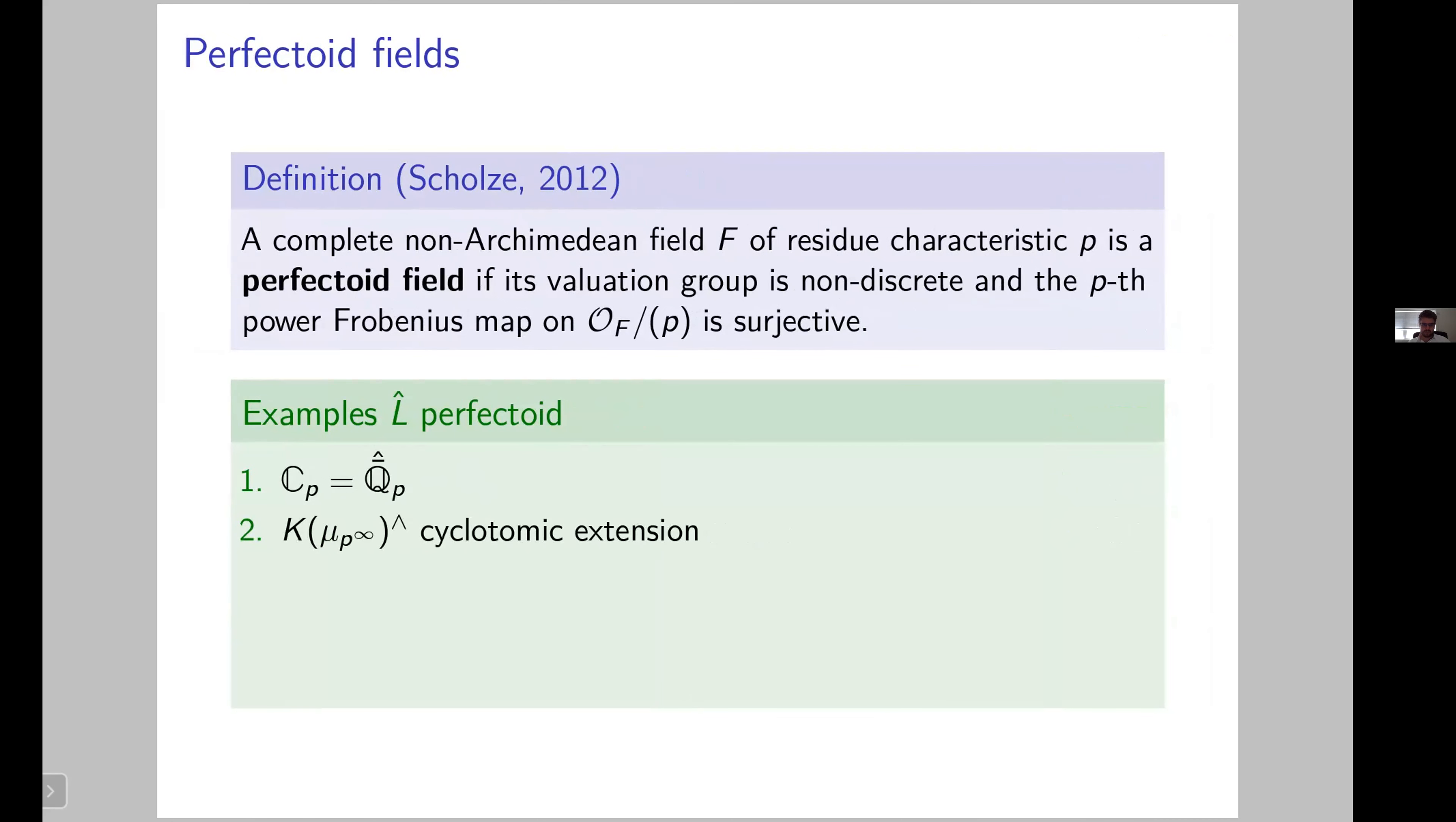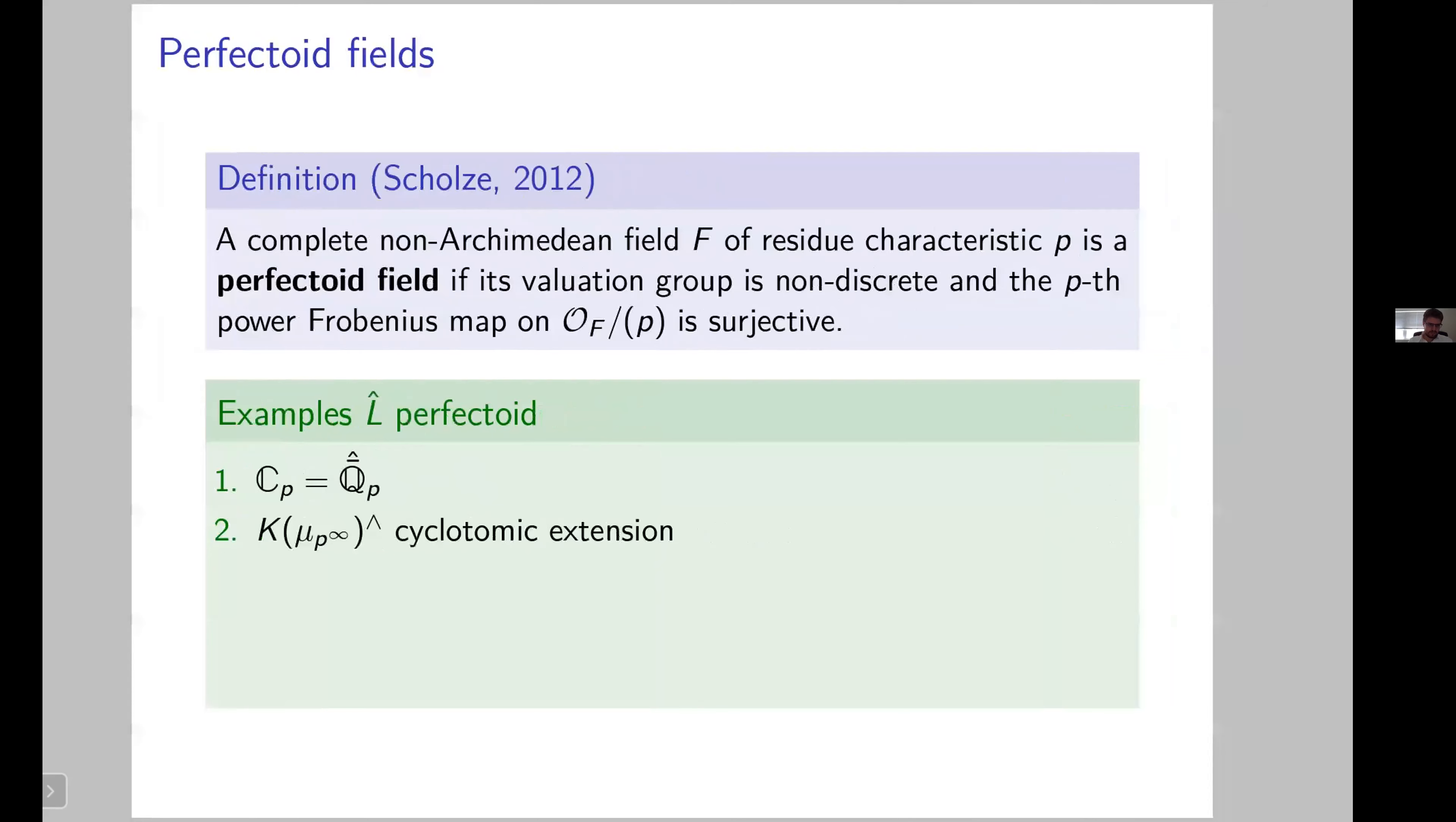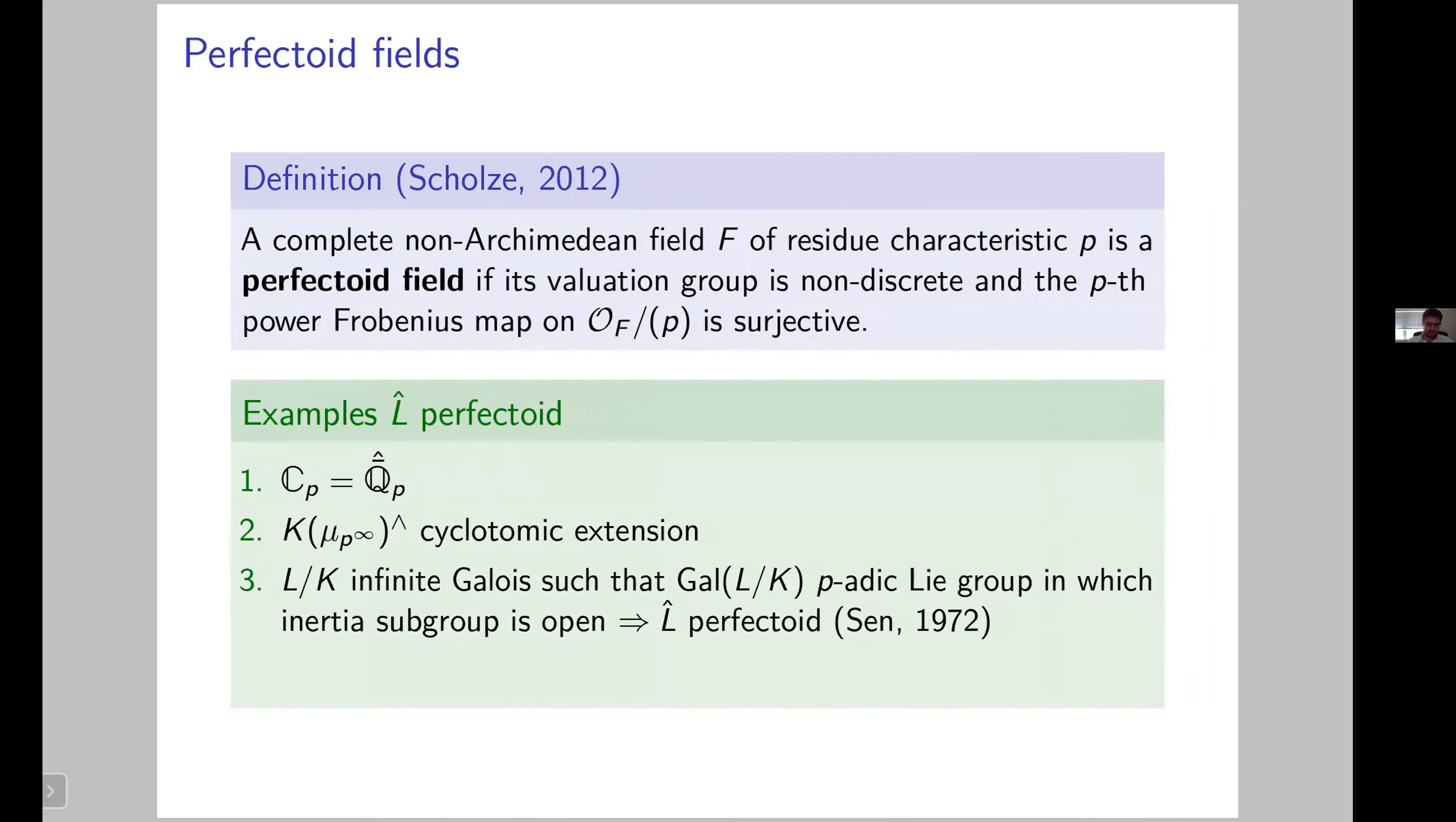The completion of Q_p bar, which is called C_p, is a very naive example of perfectoid field. But more interesting for us, for Iwasawa theory, the cyclotomic extension, its completion is a perfectoid field. More generally, if you take an extension whose Galois group is a p-adic Lie group in which the inertia is open, then the theorem of Sen from 1972 tells you that actually the completion of L is a perfectoid field. Finally, a last example to have a non-Galois example: if you take your field K, you add all the p roots of p and you complete, it's again a perfectoid field. For the motivation coming from Iwasawa theory, it's very interesting because these fields are typical extensions that you encounter in Iwasawa theory.